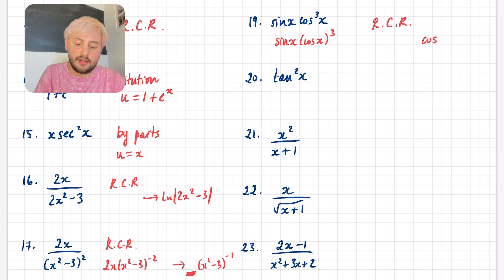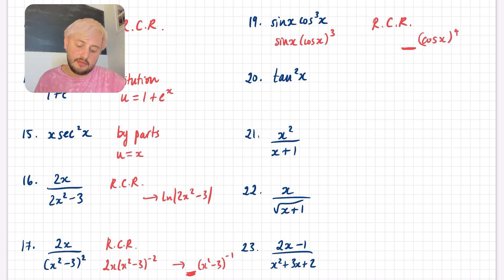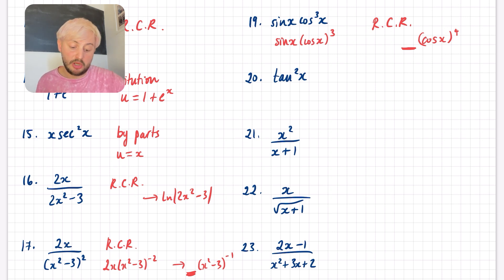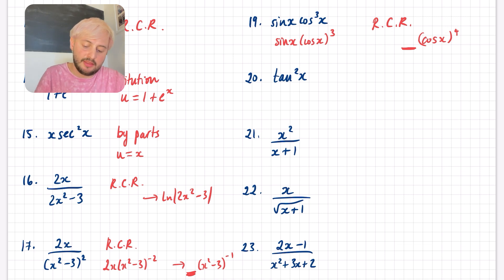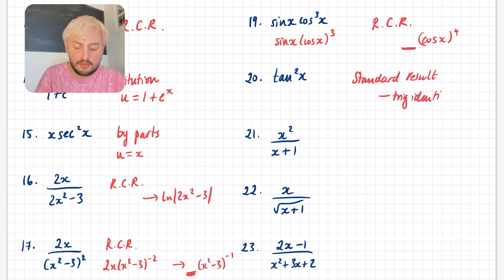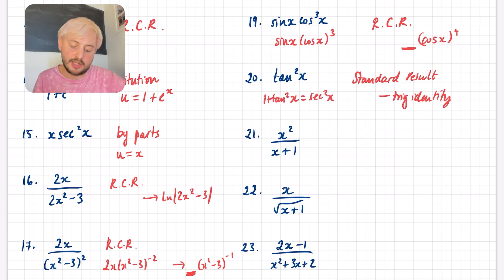Question 20: tan²x. The first thing to ask is, is there a standard result? I don't know anything that differentiates to tan²x. So I should see if I can manipulate it. This one is actually going to be a standard result, but it comes from a trig identity. What you're going to use is: 1 + tan²x = sec²x. So you can make this into something we can actually integrate.